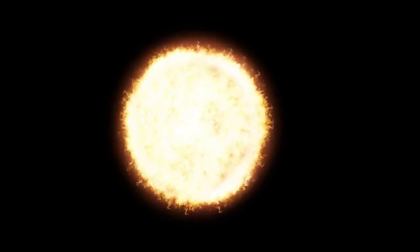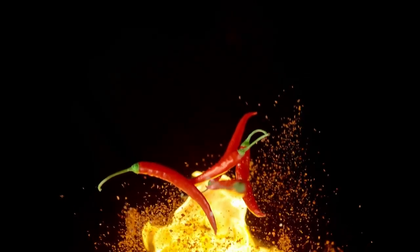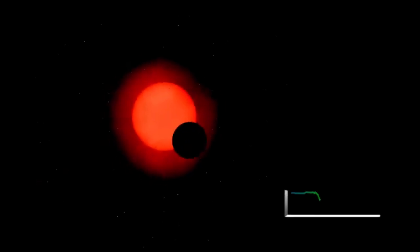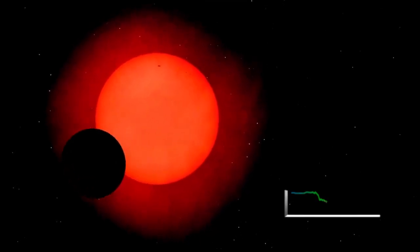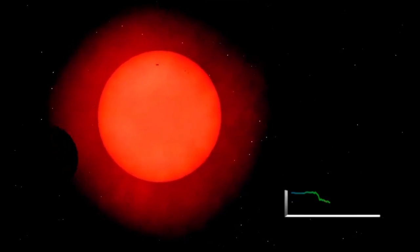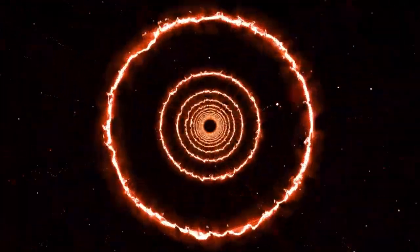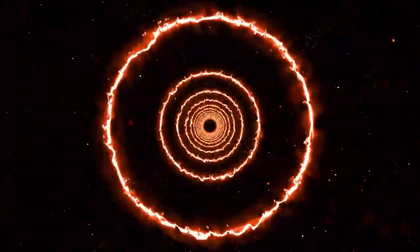A supernova is one of the most spectacular and violent events that can occur in a star's life cycle. It happens when a star, having exhausted its nuclear fuel, can no longer support itself against the force of gravity. The core collapses, triggering a massive explosion that releases an enormous amount of energy.